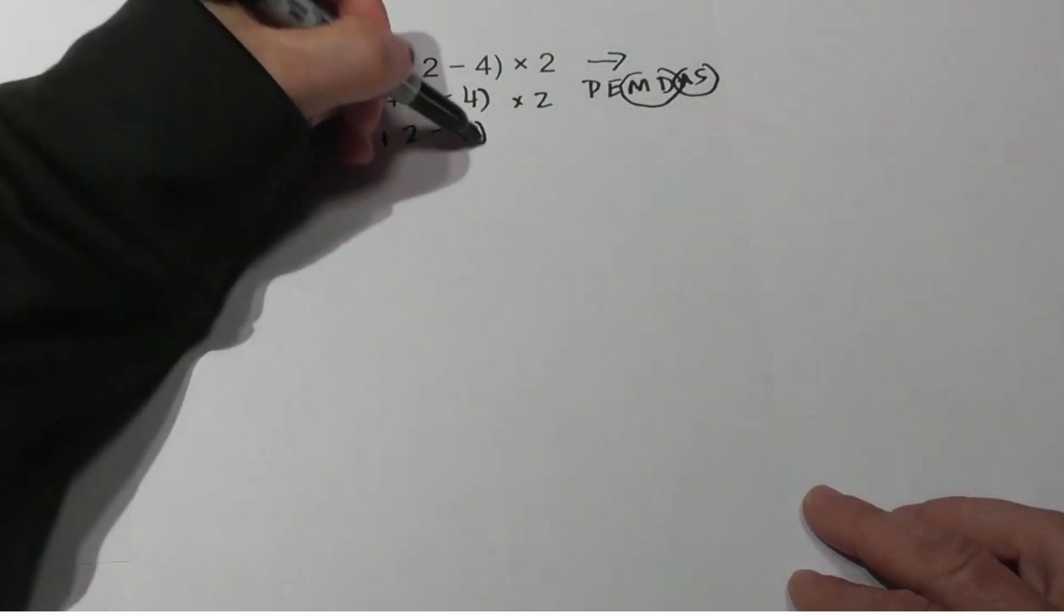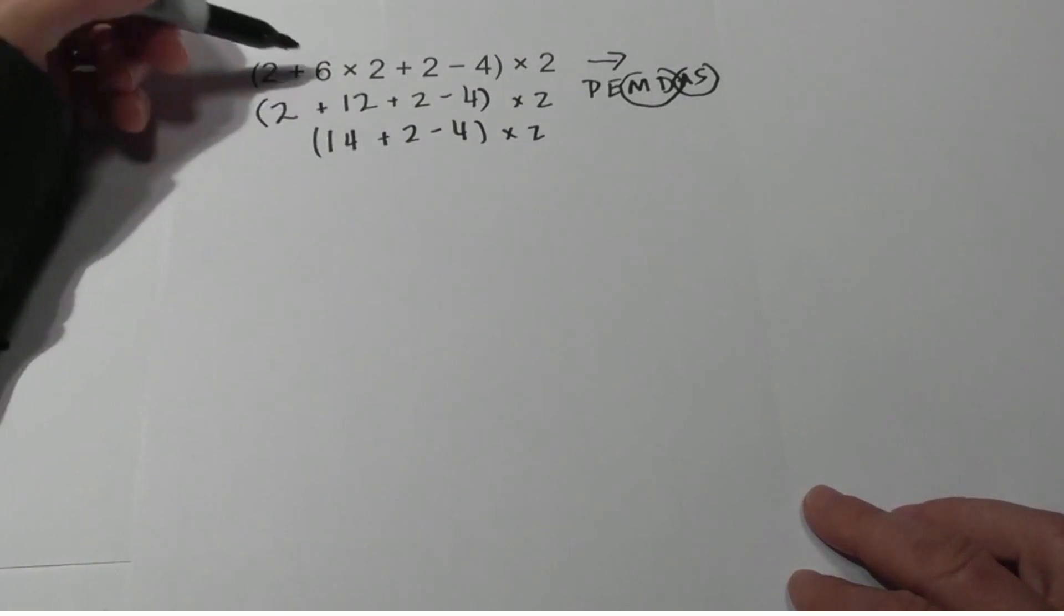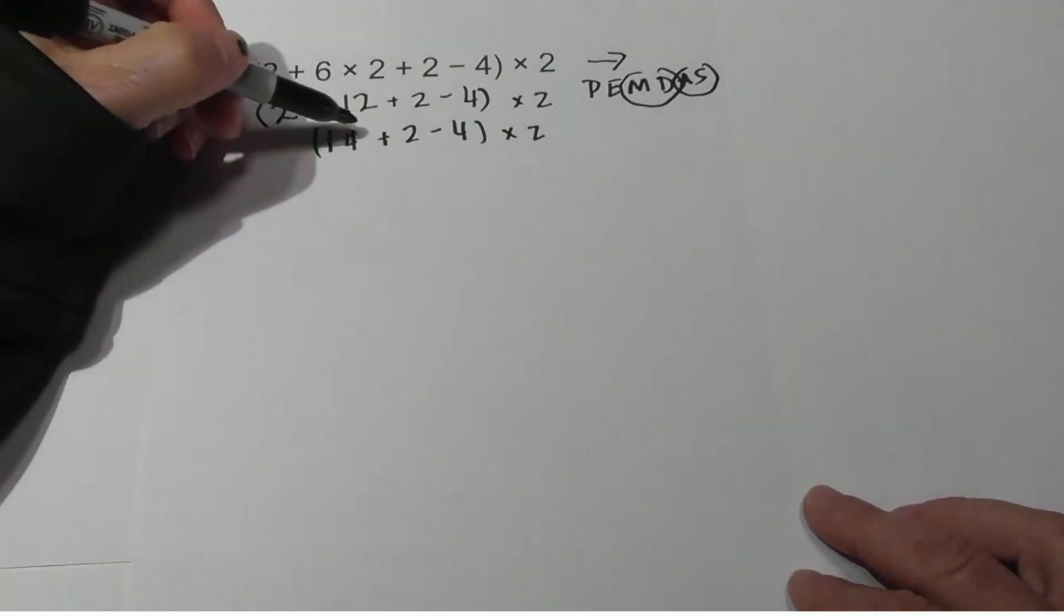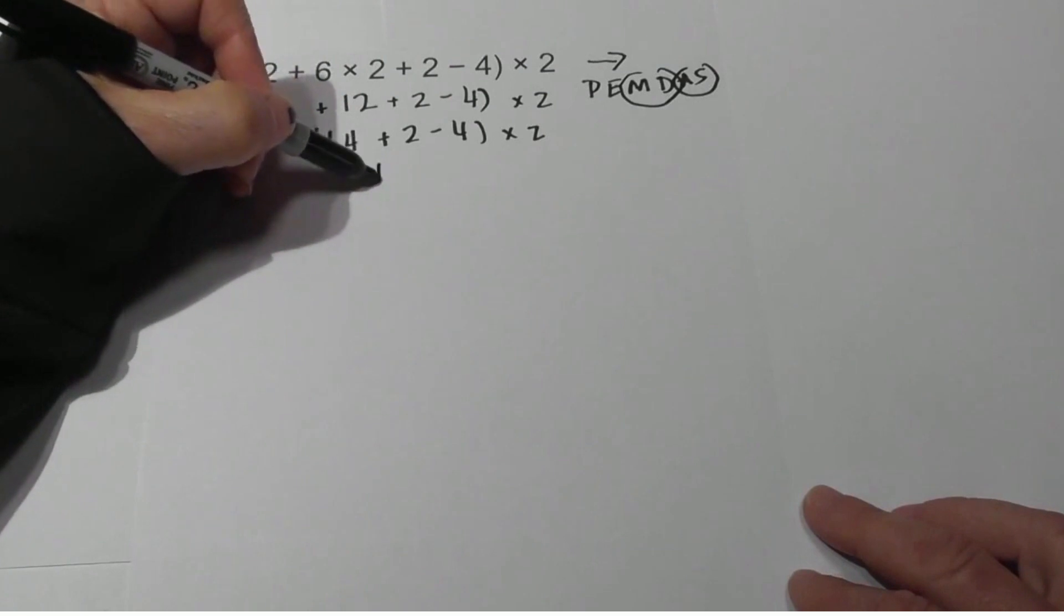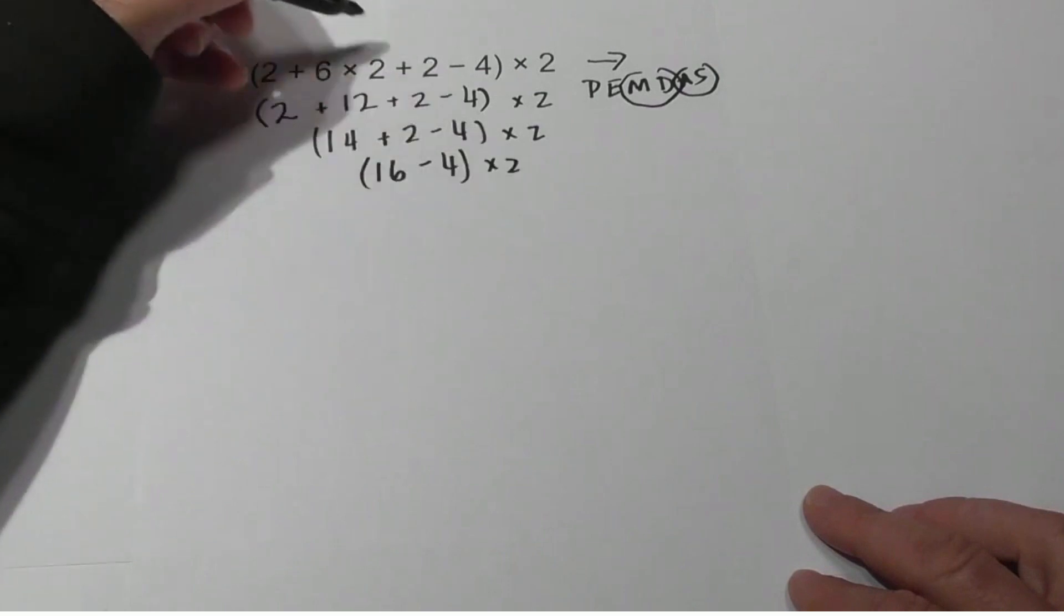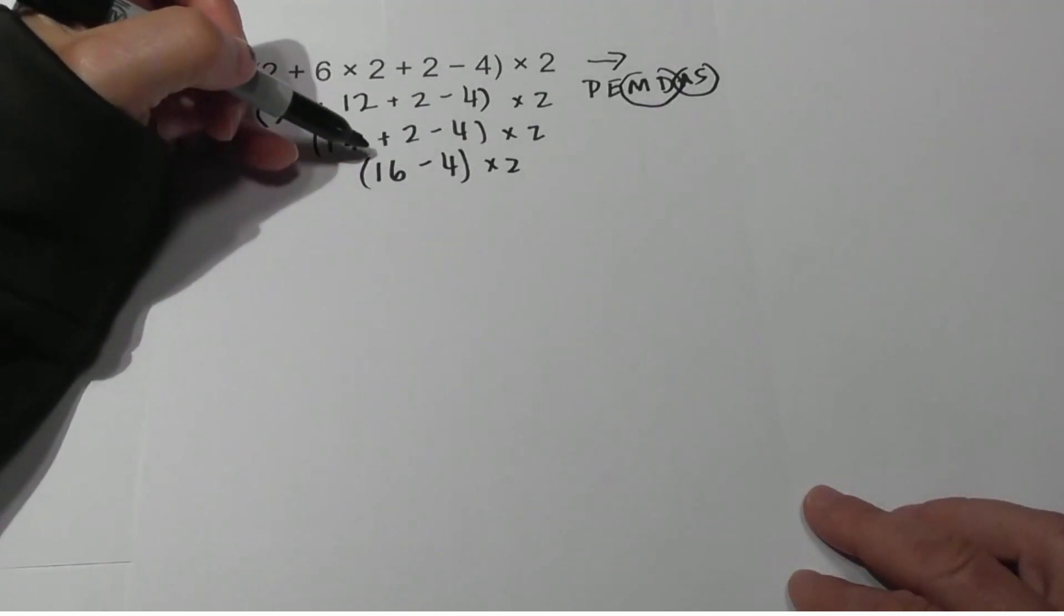You could do this in your head, but you may make a mistake. I'm just showing you how I like to work it. Next, we go 14 plus 2 is 16. Bring down the minus 4 times 2. Notice how it's narrowing down to where we get to the answer.